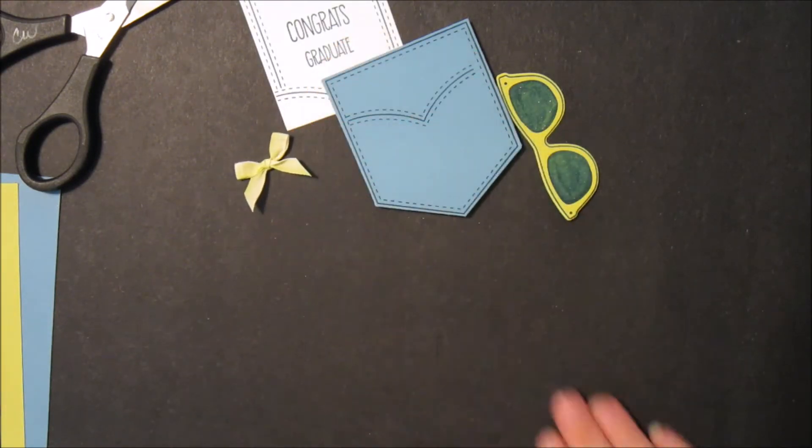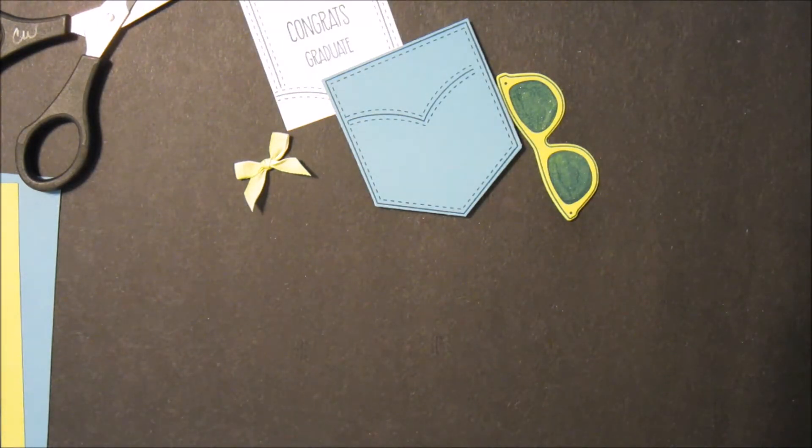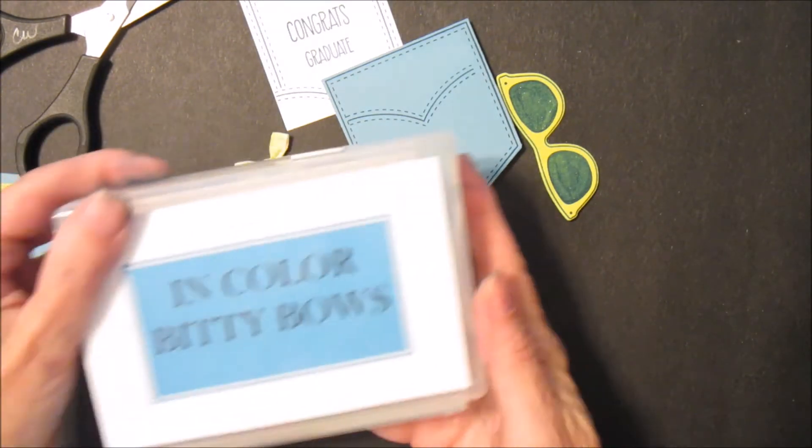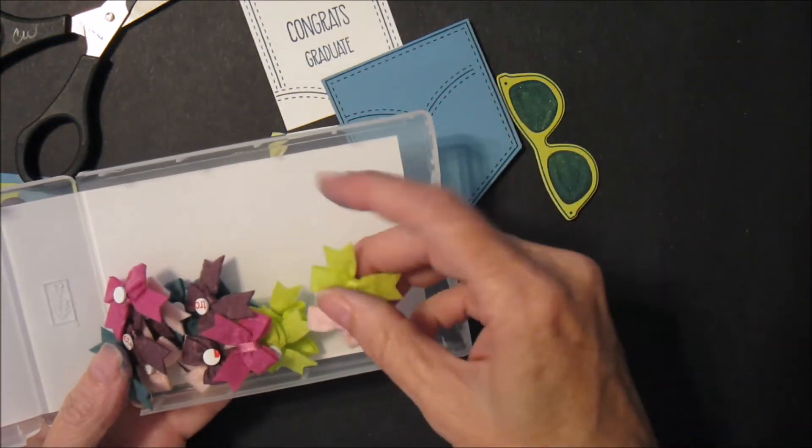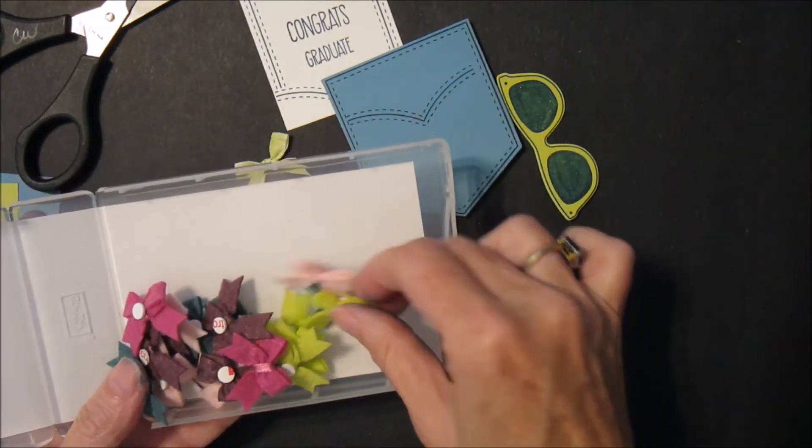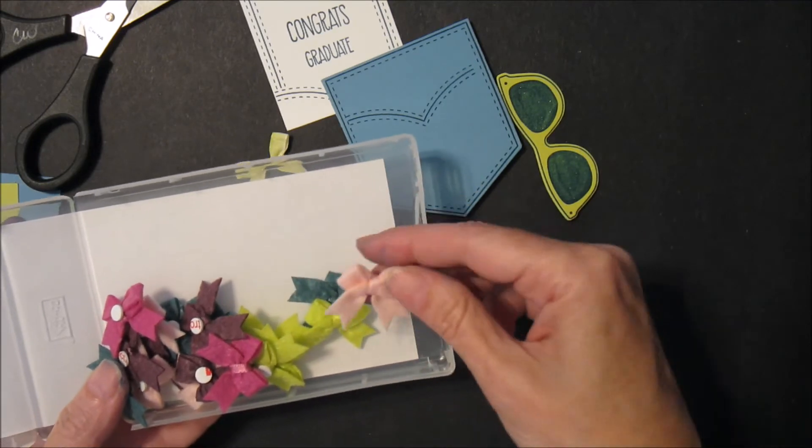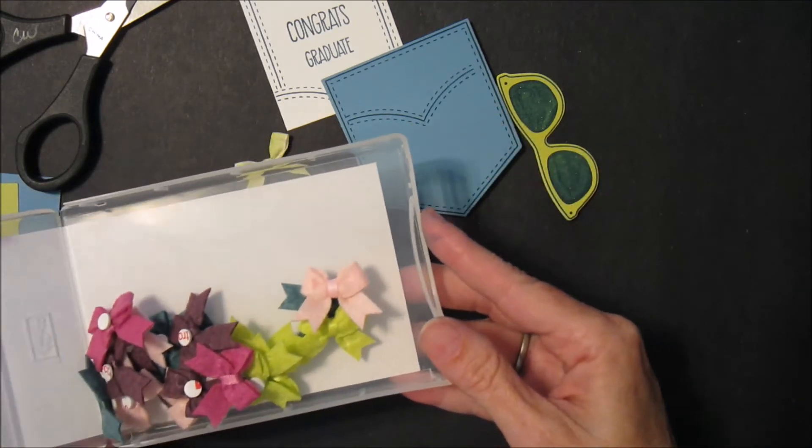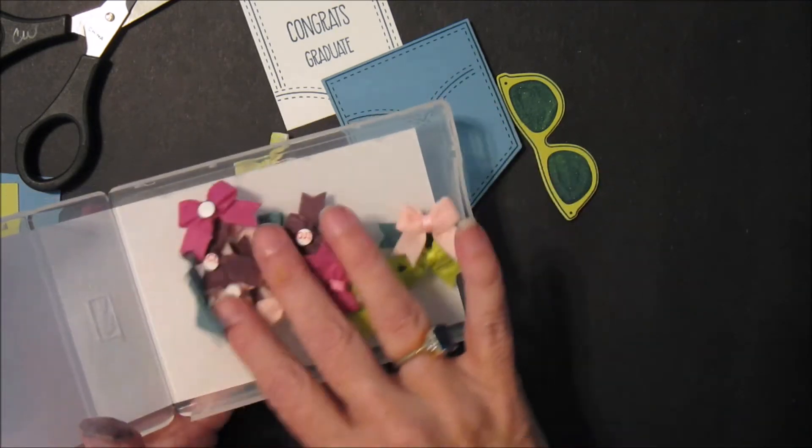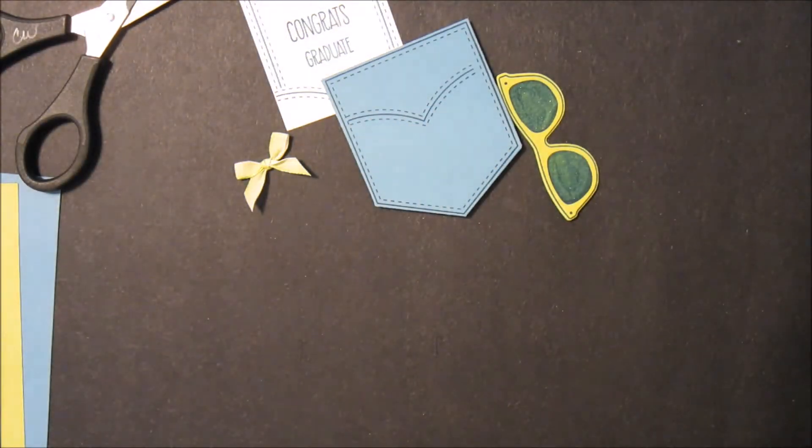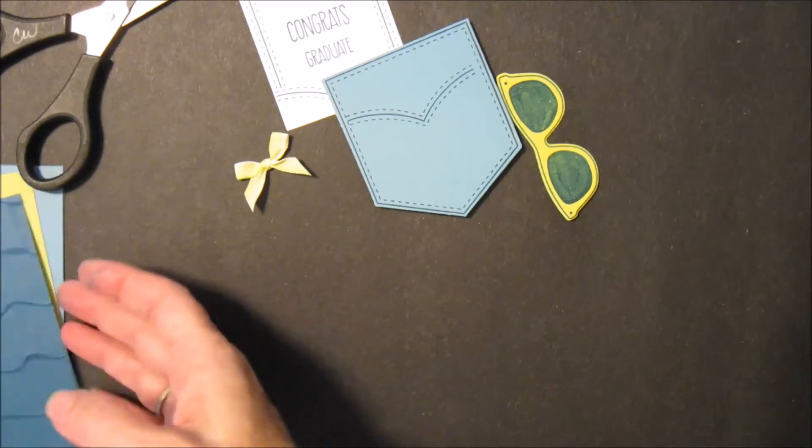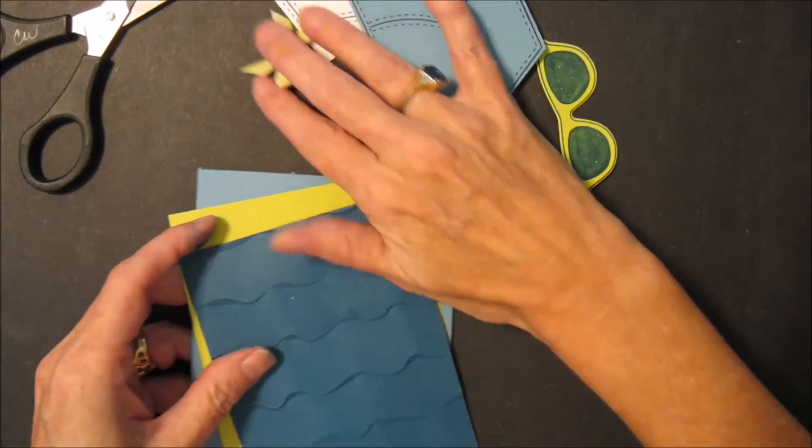And you could also use the little In Color bitty bows, these little ones here. They would work as well in the Lemon Lime, or even one of the other colors if you wanted to jazz it up some. So that's another idea if you don't have the ombre ribbon. So we'll go ahead and start assembling this.